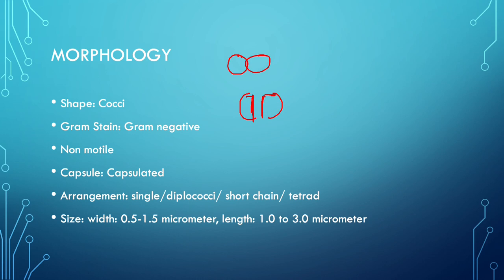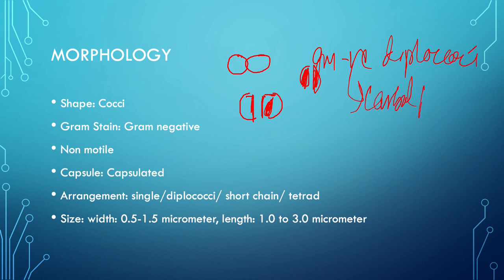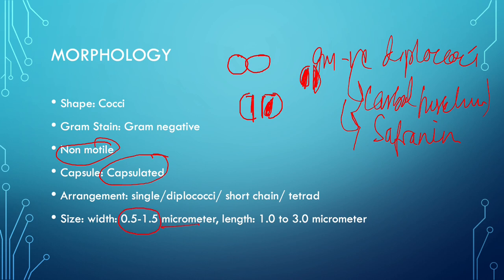The distinguishing factor of this bacteria is that it is a gram-negative diplococci. Gram-negative means it takes the color of carbolfuchsin or safranin as the counter stain. These bacteria are non-motile and capsulated. The width is about 0.5 to 1.5 micrometers, and the length is about 1.0 to 3.0 micrometers.